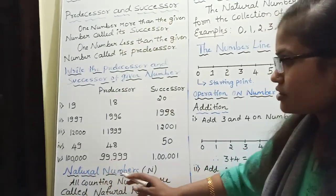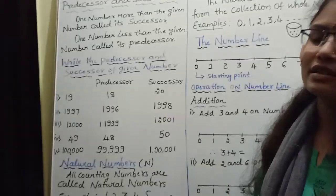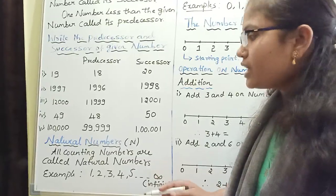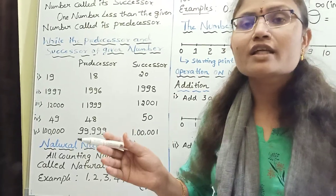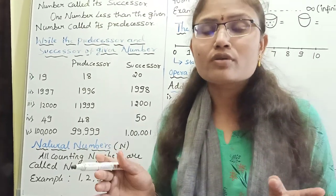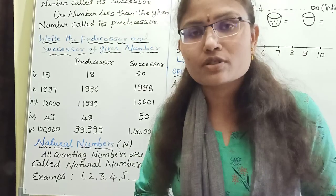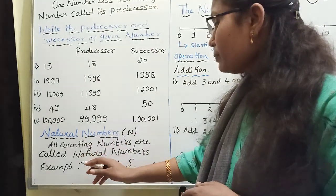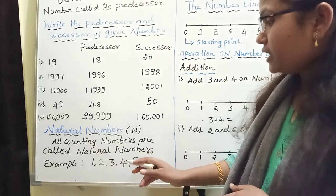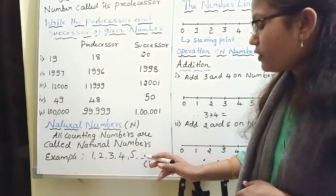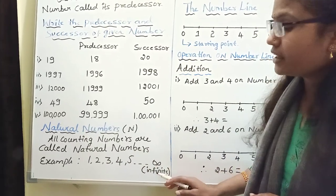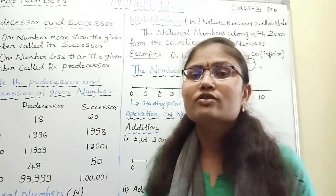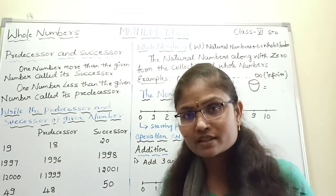Now you can see here: all counting numbers are called natural numbers. The numbers we use for counting — 1, 2, 3, 4, 5 till infinite — are called natural numbers. Here, infinite represents that there is no end for those numbers.